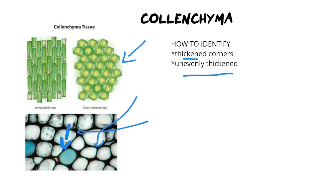Now let's move into the final set of tissues: the vascular tissues. These are the transporting tissues we see in plants and they are very specialized in their structure — xylem and phloem. Xylem transports water and has a very specific structure. It has elongated cells — long and thin. It has a large lumen, meaning the hole or opening inside is quite large. Xylem cells are dead and empty, so there is no cytoplasm and no organelles that would get in the way of transporting water.